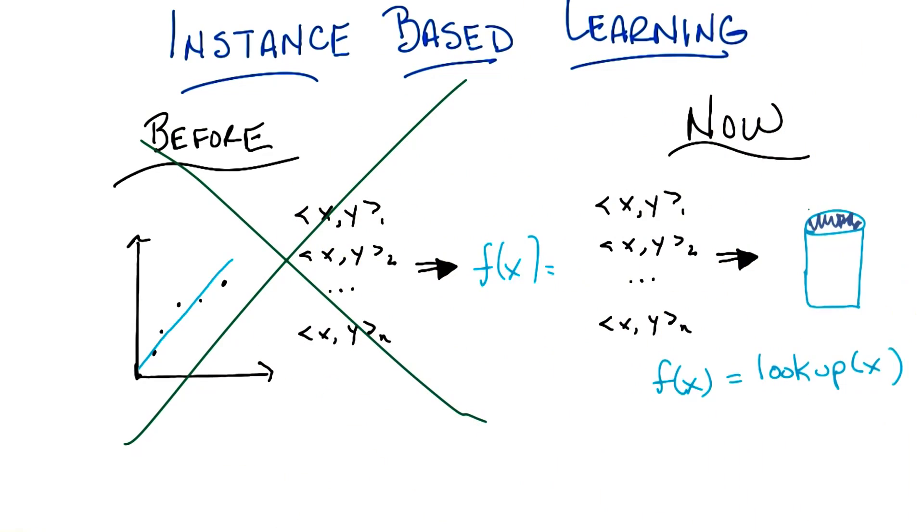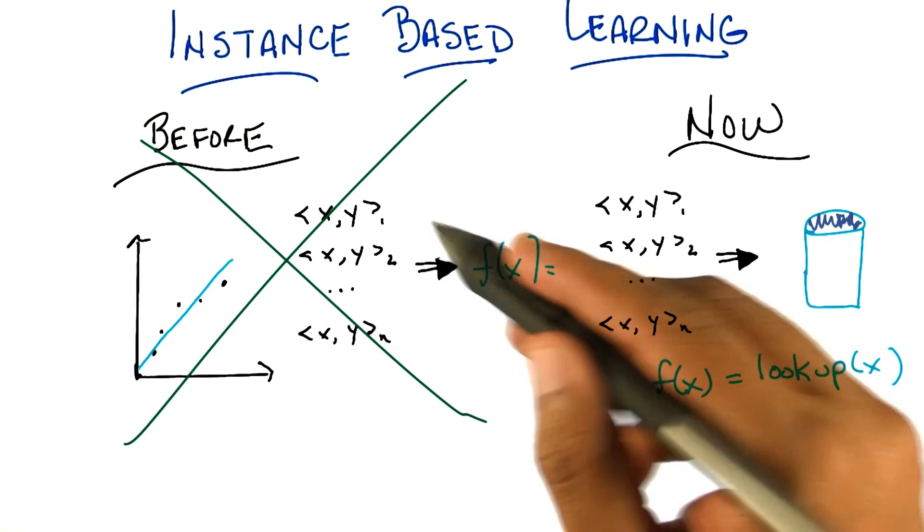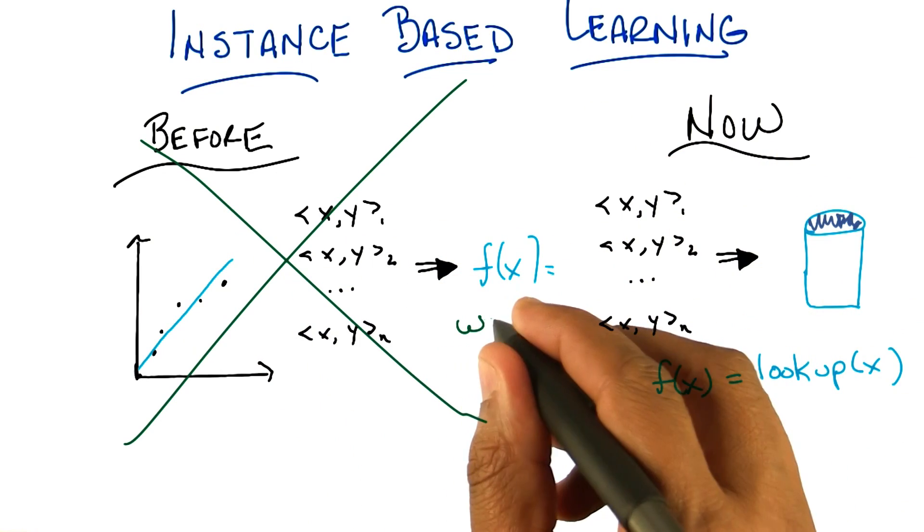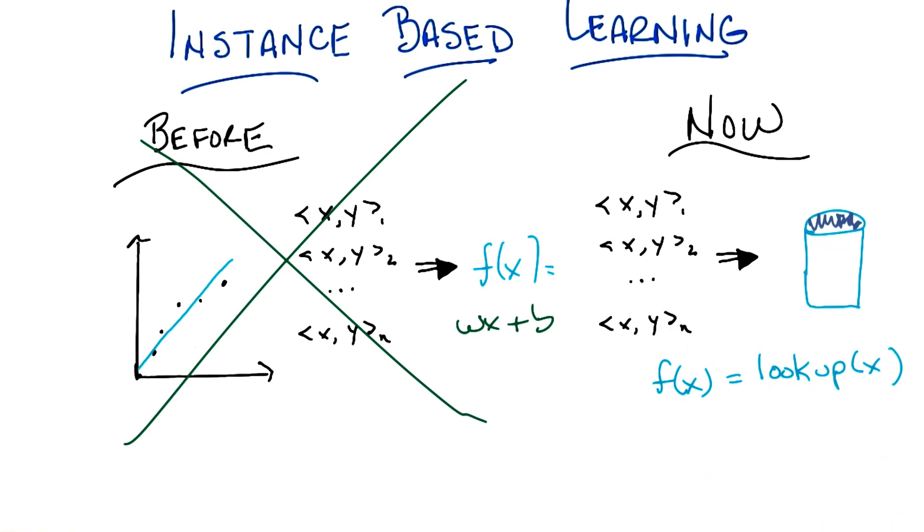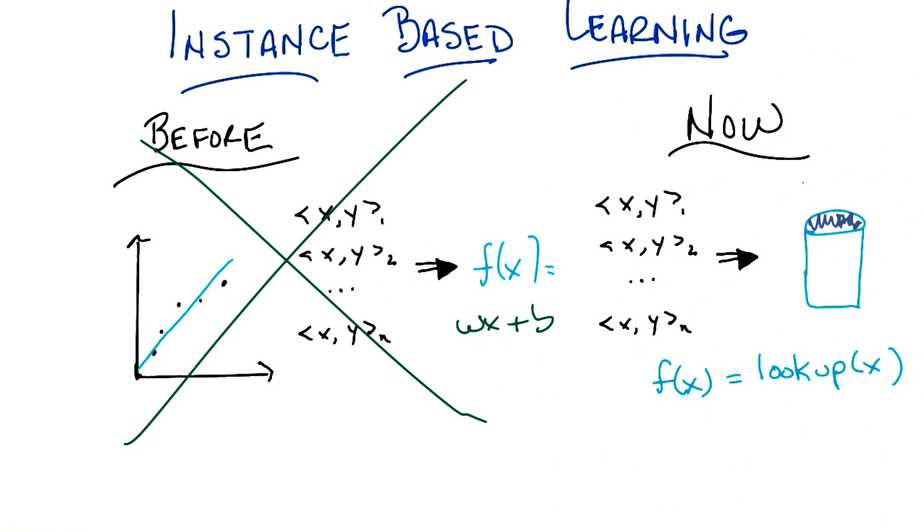And we're done. None of this fancy schmancy learning, none of this producing an appropriate function like wx plus b or whatever the equation of a line is. None of that fancy stuff anymore. We just stick it in a database. People have written database programs before. We look it up when we're done. We're done. Period.